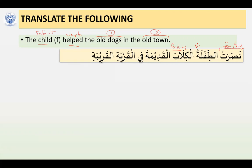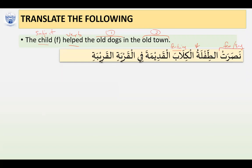We have Tiflatun as the fa'il — the subject — in the case of Rafa by Dhamma. Who did the child help? The child helped dogs. So Kilab is the Maf'ulun Bihi, the receiver of the action, in the case of Nasb by Fatha. Because Kilab is a broken plural not referring to human beings, we treat it as a feminine singular. The adjective Al-Qadimata takes the Ta Marbuta to make it feminine. The Mawsuf is Al-Kilaba and the Sifah is Al-Qadimata.